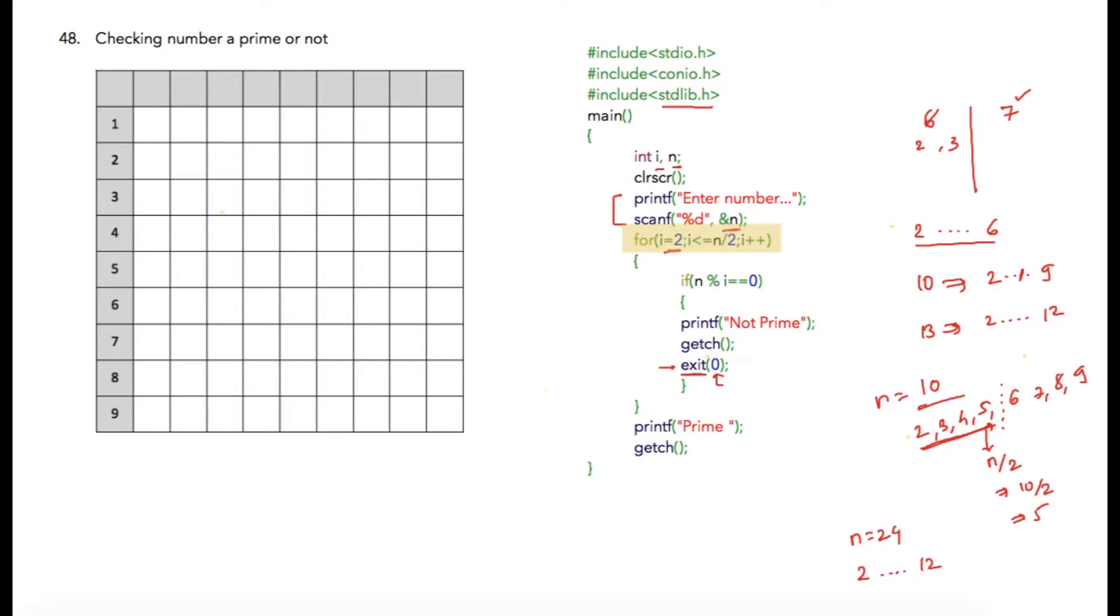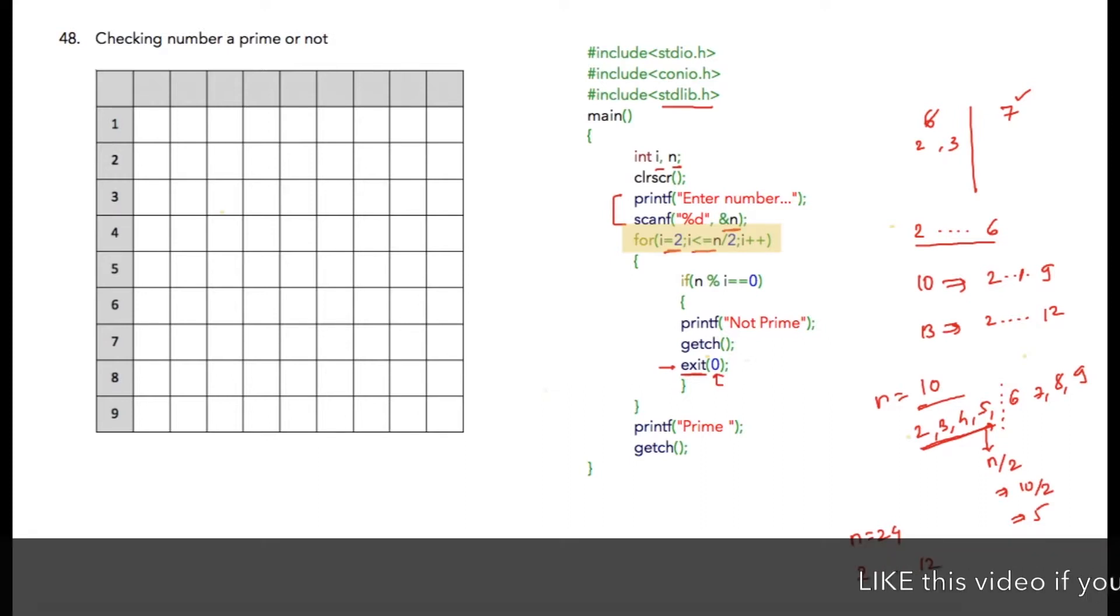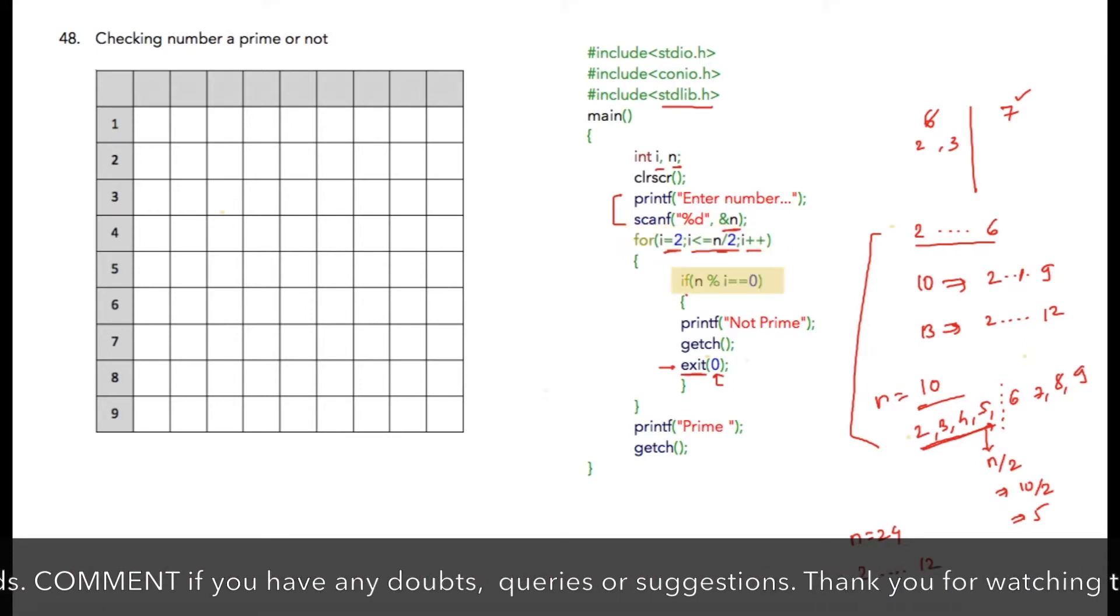So here are two important statements: we are asking user to enter number and the number will be stored at the address location of n. Then here is our loop. I am initializing i to 2, and our condition for the loop will be i less than or equal to n by 2. Why n by 2? I have already explained it. And then we are going to increment i by 1 using i++.